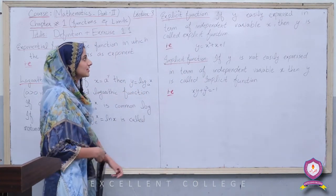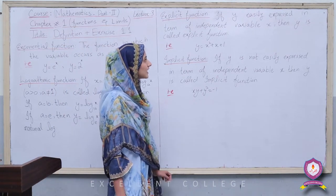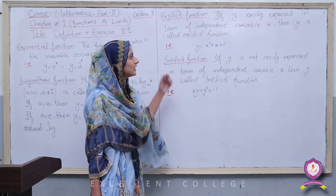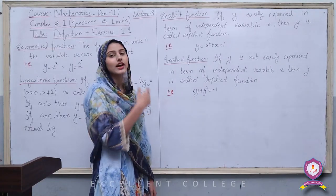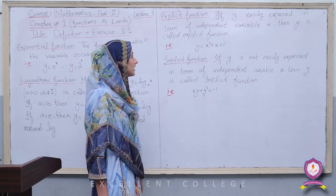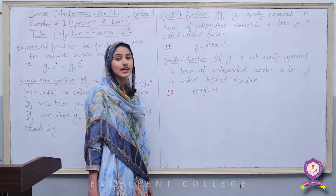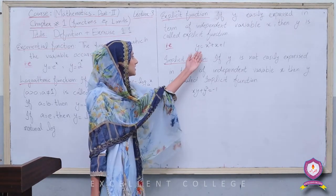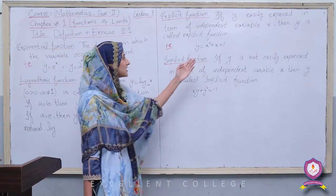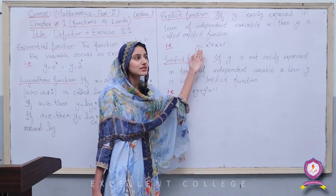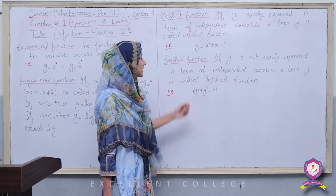Next definition is Explicit Function. If y is easily expressed in terms of the independent variable x, then y is called an Explicit Function. For example, y = x³ + x + 1. Here we don't need to make any changes to express y separately — this is an explicit function.